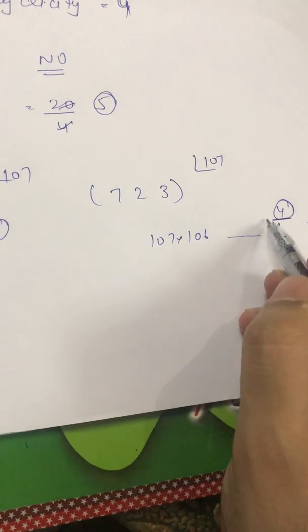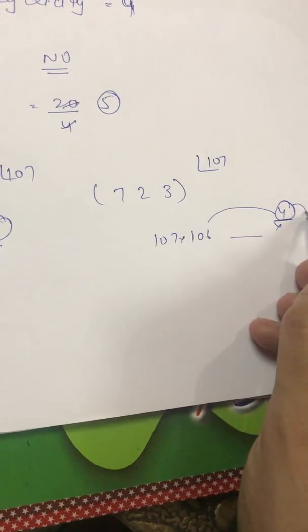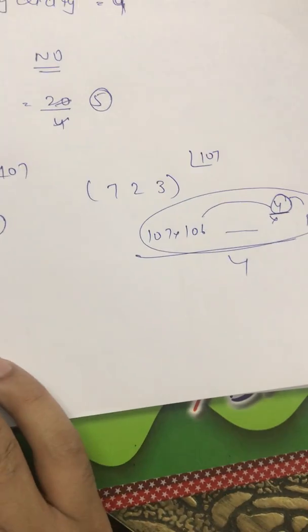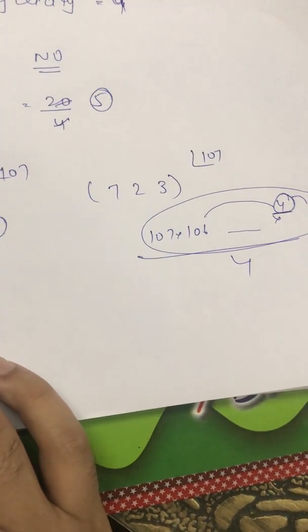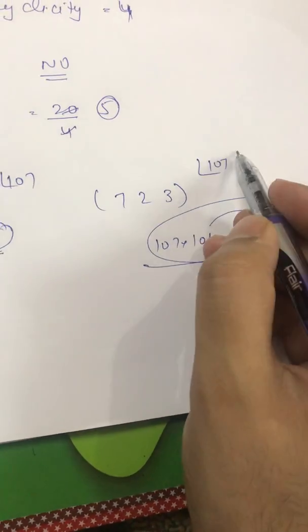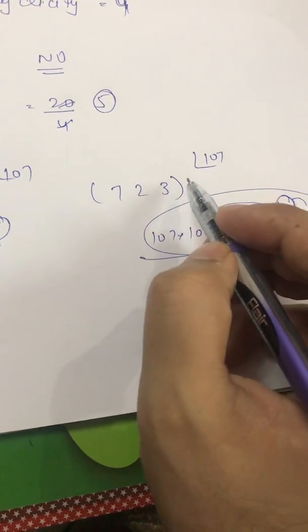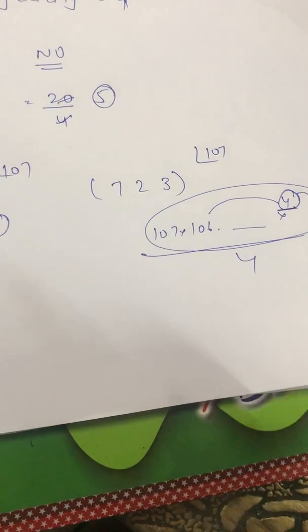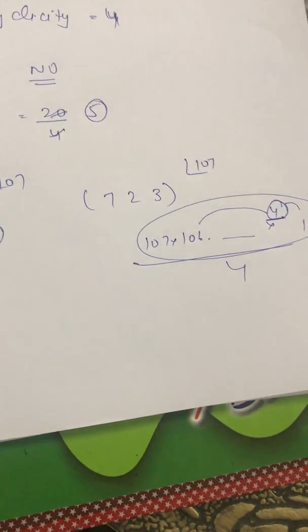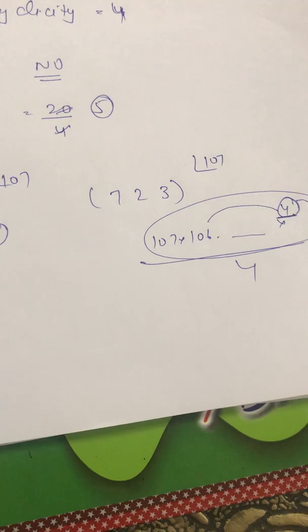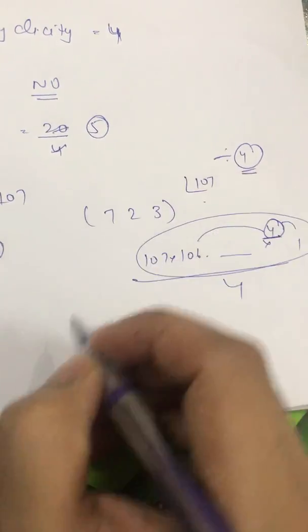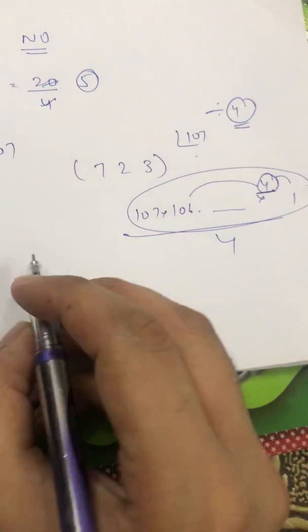If you are getting 4 over there, it means the entire term if it is multiplying by 4 it means whatever result will come that will completely divide by 4. So whenever you are getting a number in the power that is completely divided by 4, by default we take the power as 4.